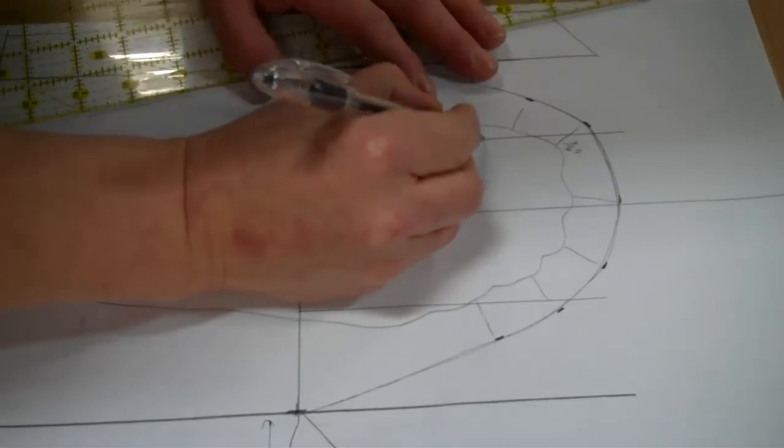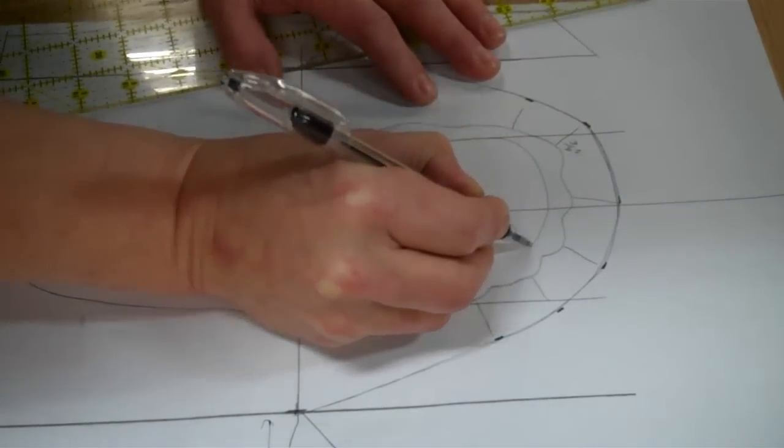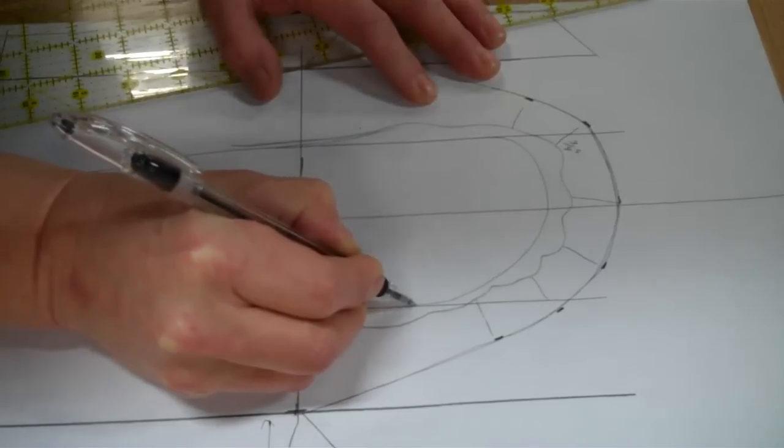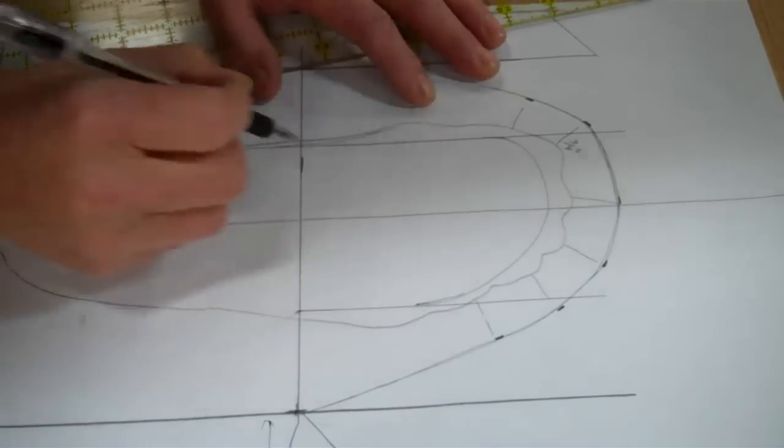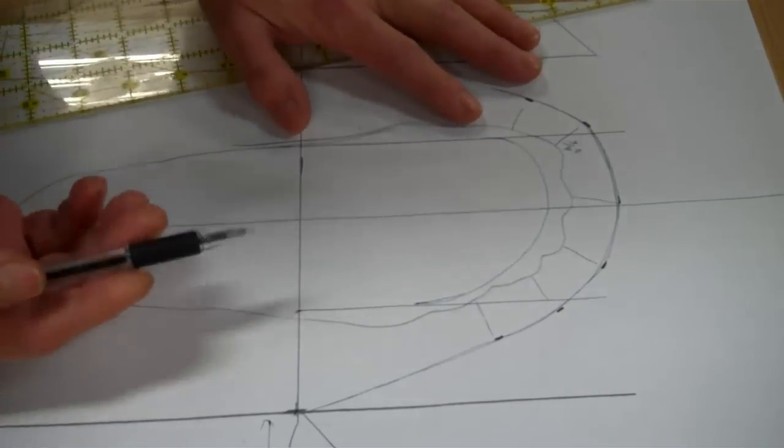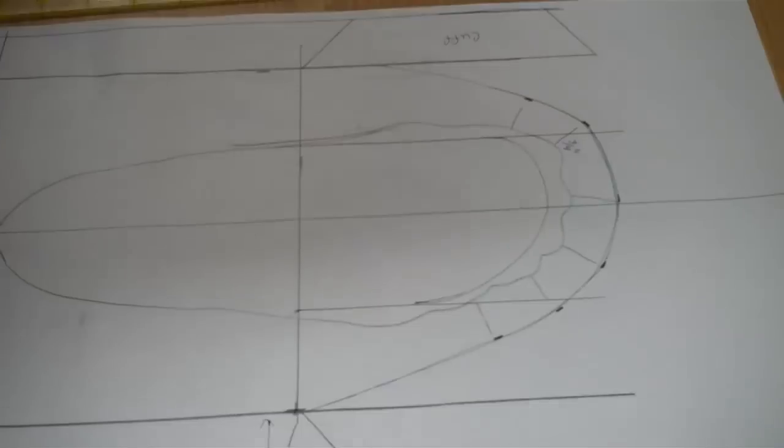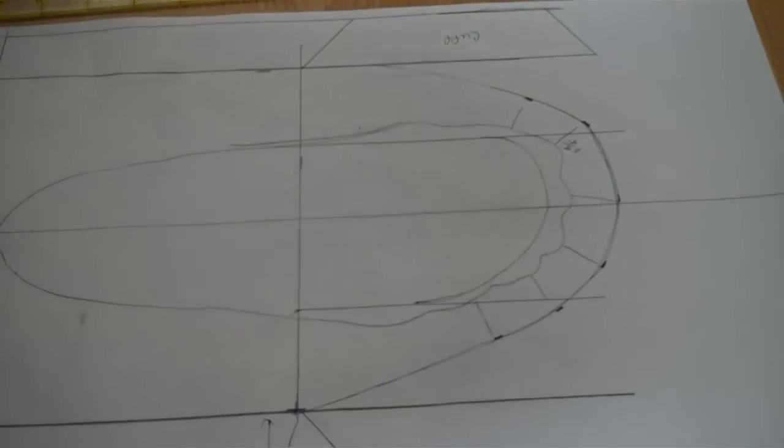And then what you do is you just arch it. And you want to arch it just back of your toenails. So this inside part right here would be your vamp that's going to fit your foot. So those are the instructions for making patterns that are custom fit to your foot.